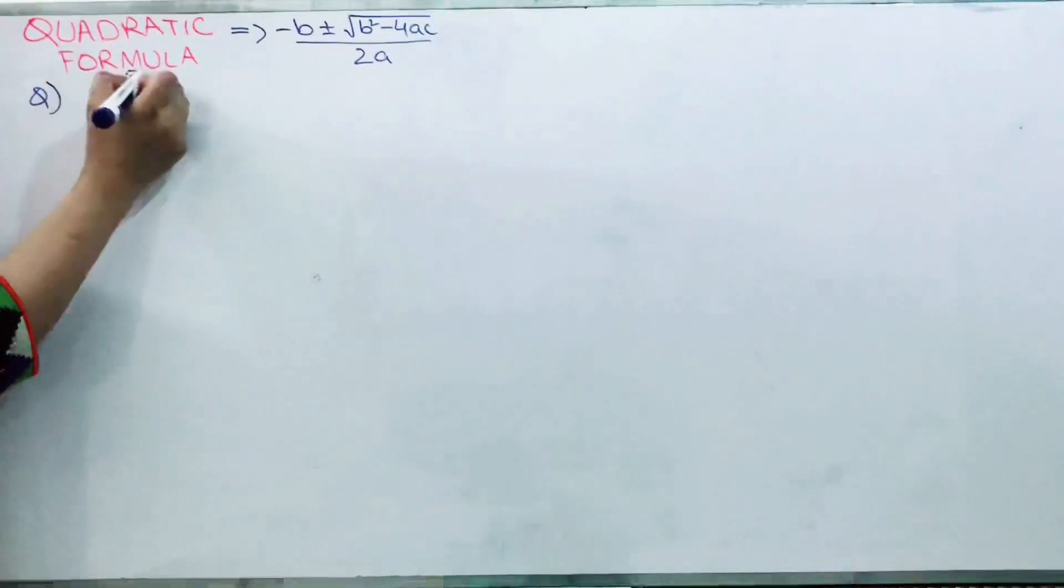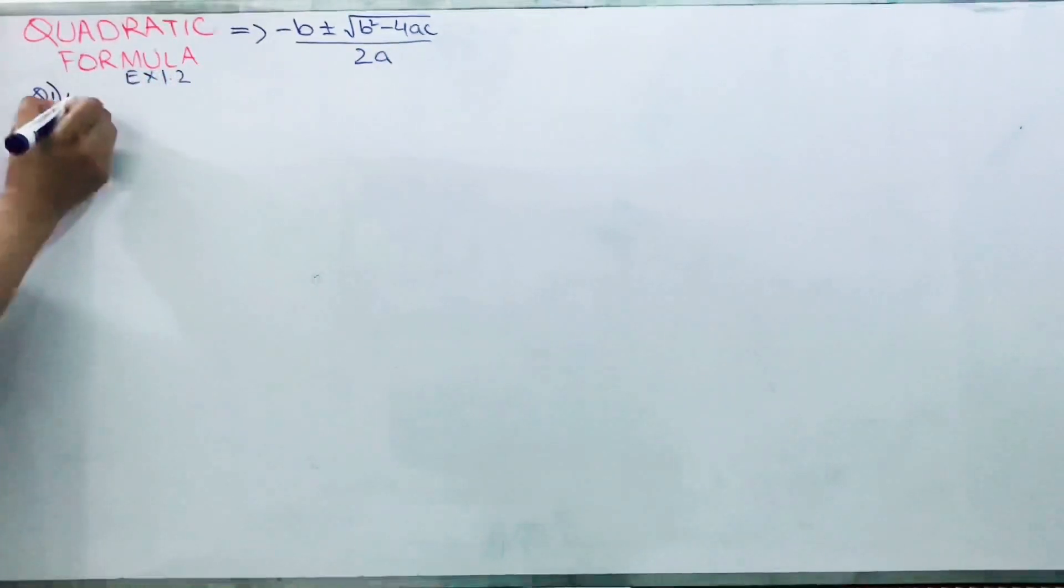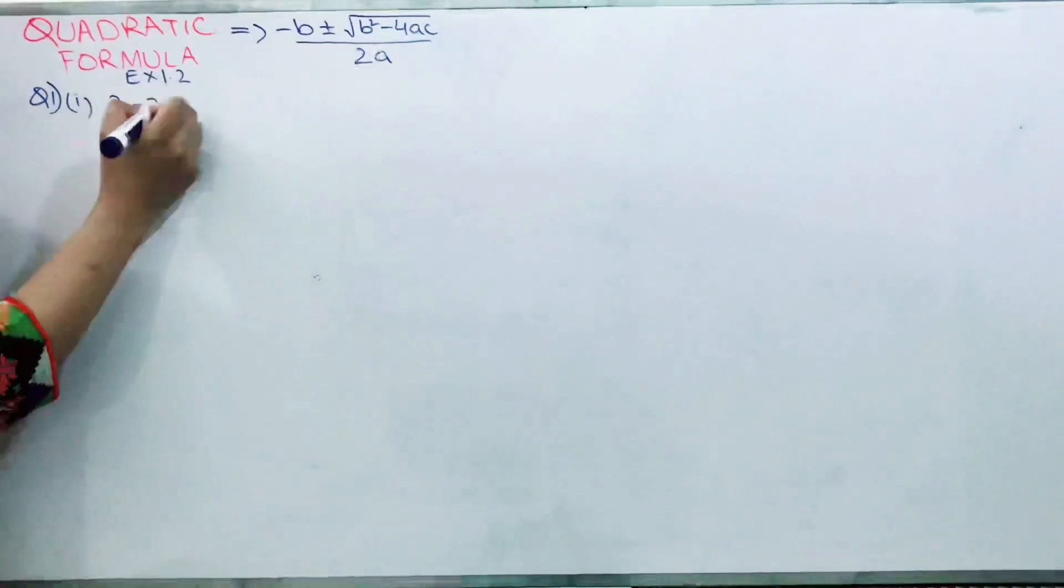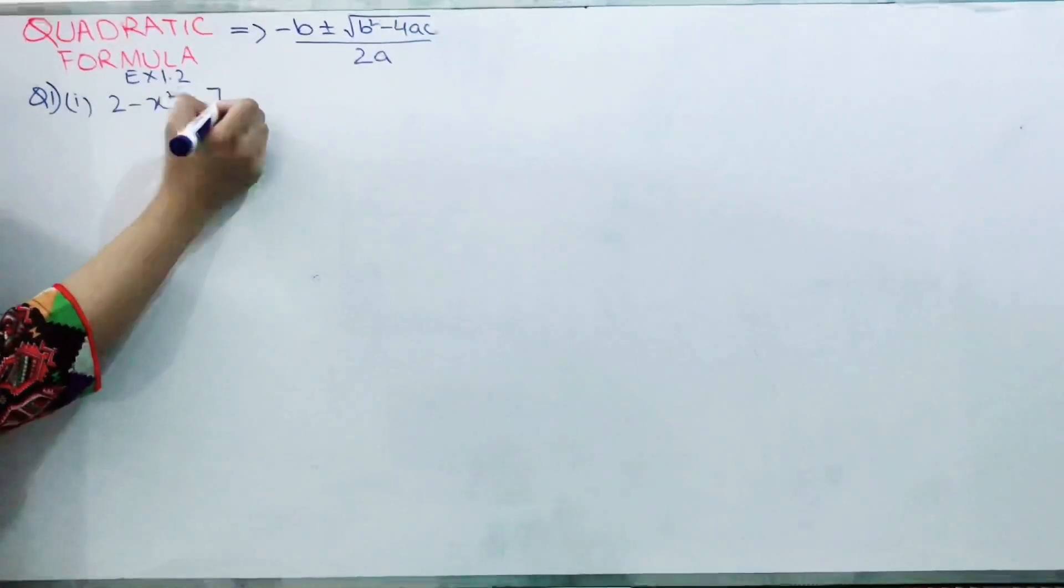This is from Exercise 1.2, question number 1, part number 1. My question is: 2 minus x square equals 7x.